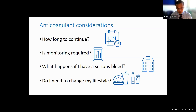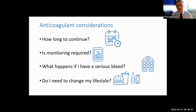How long to continue on anticoagulation primarily depends on why you are taking it. If for stroke prevention due to atrial fibrillation, anticoagulation would usually be long-term. If for treatment of venous thromboembolism, it depends on the risk of recurrence once anticoagulation is stopped. Most provoked events of venous thromboembolism are treated with three to six months of anticoagulation, while in unprovoked venous thromboembolism the decision is made on an individual basis, and many patients require extended anticoagulation.